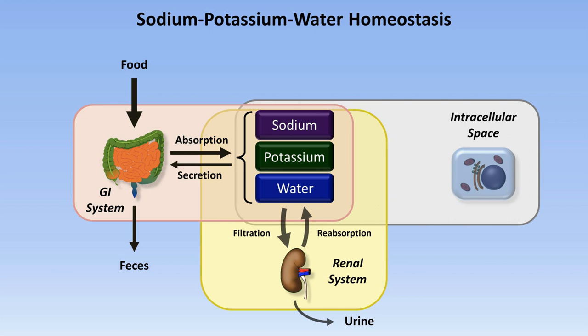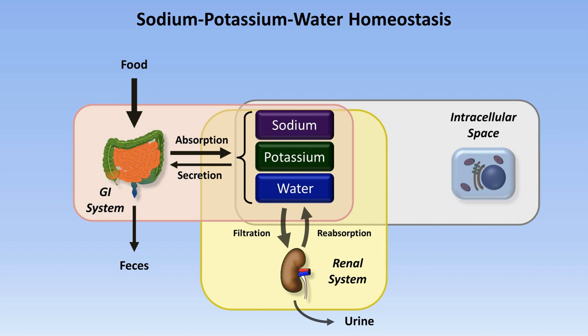Next we have the intracellular space. This is the relatively abstract fluid compartment composed of the sum of the interiors of every cell in the body. It's obviously not an organ system the way the GI and renal systems are, but still plays a critical role here because potassium and water experience transmembrane shifts in response to pathology. That is, certain disease states will trigger potassium or water to move into cells or out of cells.